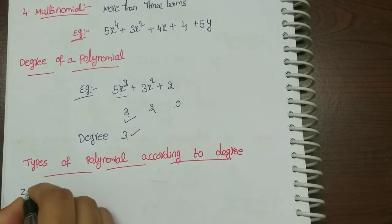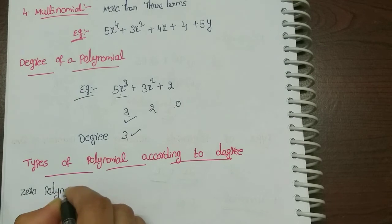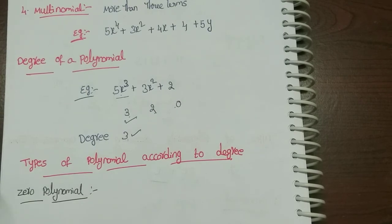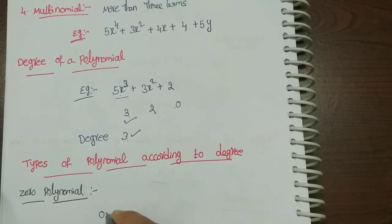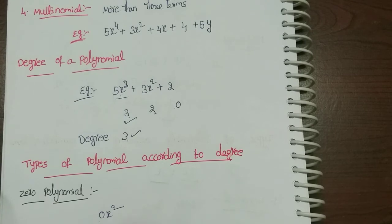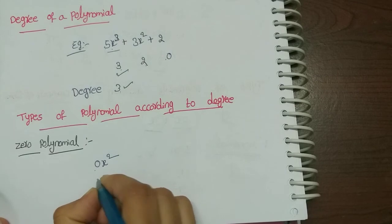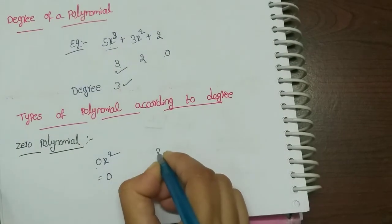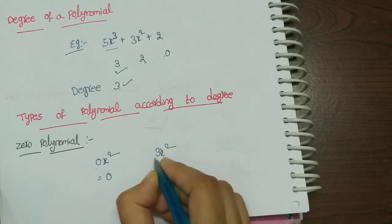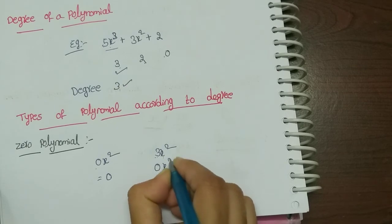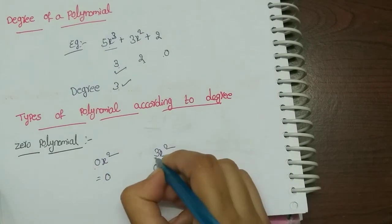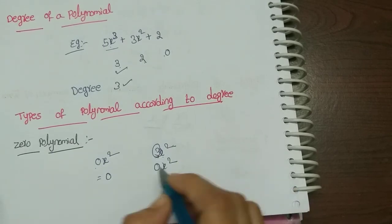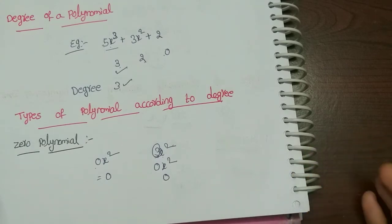First, zero polynomial. If all coefficients are zero, that is the zero polynomial. For example, 0x squared equals 0 times x squared equals 0. So 0 polynomial equals 0. The degree of the zero polynomial is not defined.